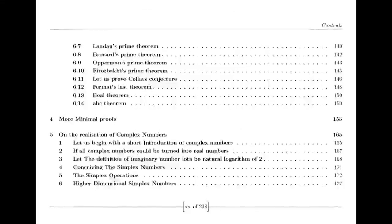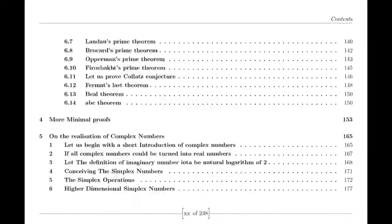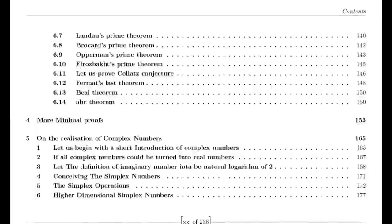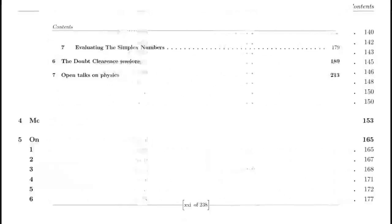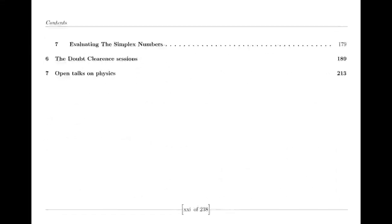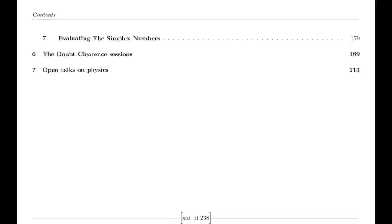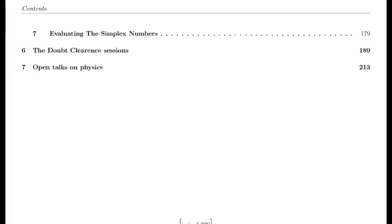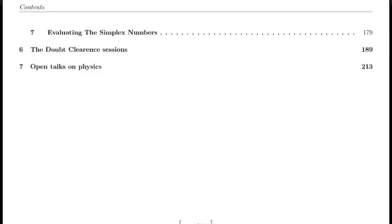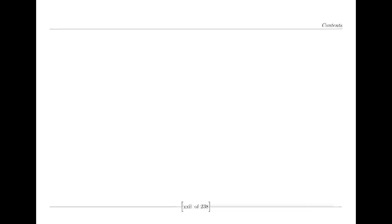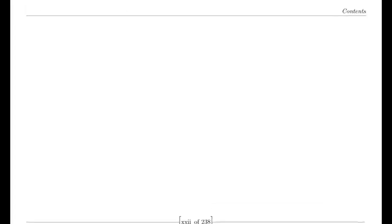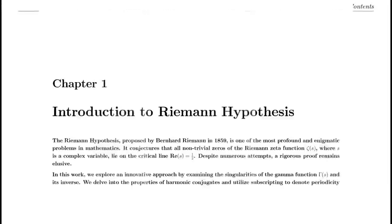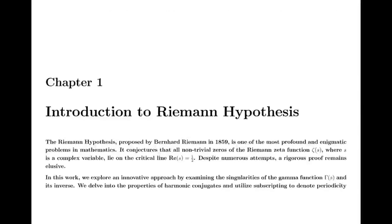Reflection properties. One of Riemann's major discoveries was the reflection formula for the zeta function. This formula demonstrates a symmetry between the values of the zeta function at s and 1 minus s. Specifically, it shows that zeta(1 minus s) can be expressed in terms of zeta(s) using factors involving pi, the gamma function, and trigonometric functions. This reflection formula is fundamental to the theory of the zeta function and provides deep insights into its structure.